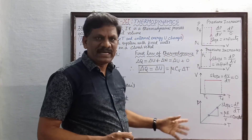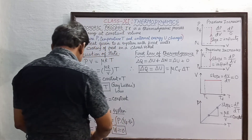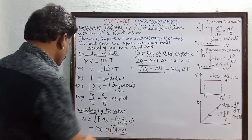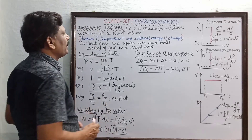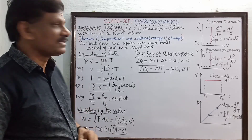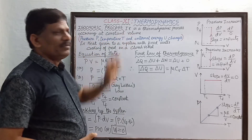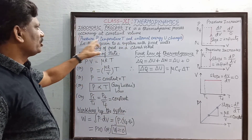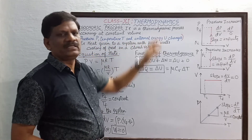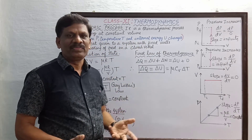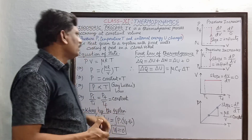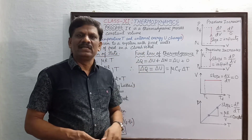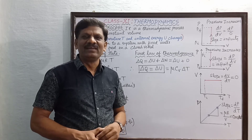To summarize: an isochoric process is a thermodynamic process in which the volume remains constant, while pressure, temperature, and internal energy of the system change. The best example is cooking of food in a closed container.